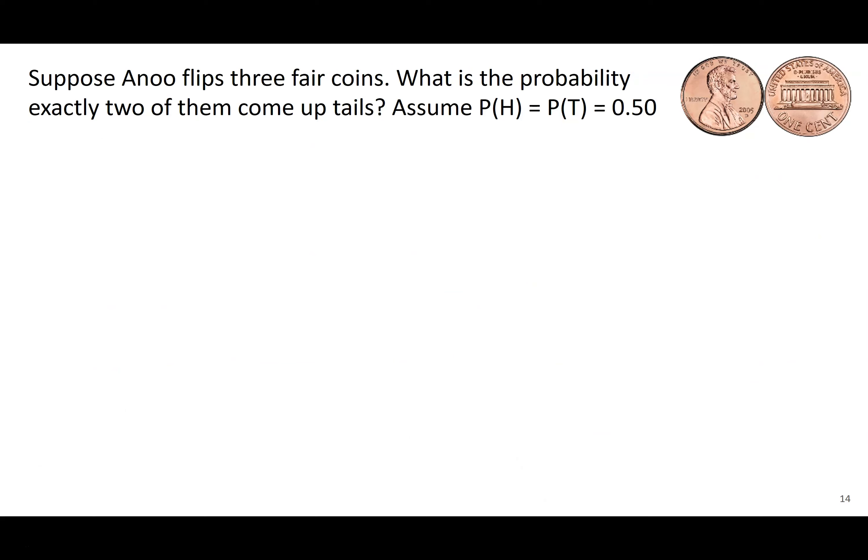So then we have an example before we end this lesson. Anoo goes ahead, they flip three coins. We want to know the probability that they flip these three fair coins and exactly two of them come up tails. So we want two tails and one head, exactly. We're going to assume since it's a fair coin, the probability of heads H is equal to the probability of tails T is equal to 0.5. We're just going to assume heads and tails.